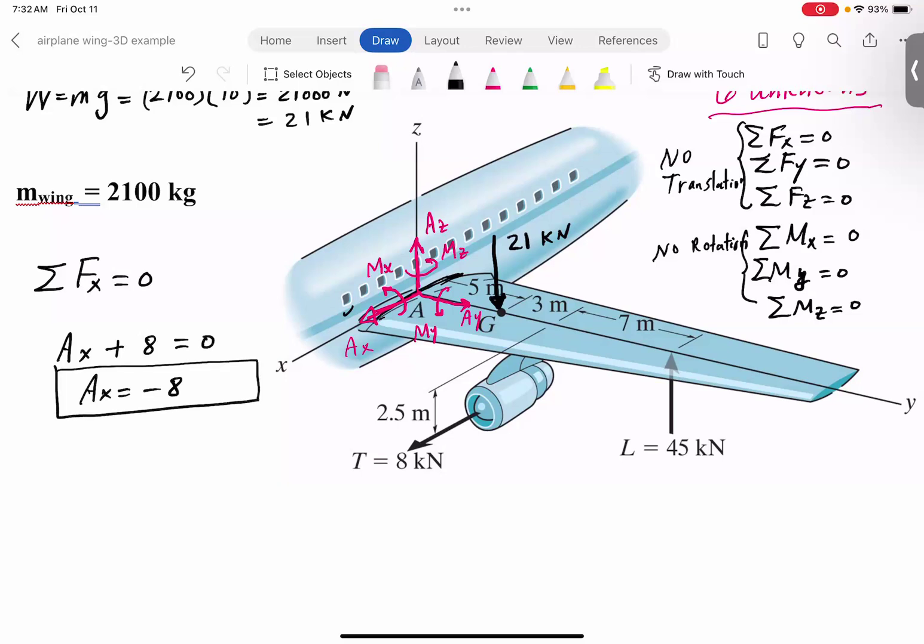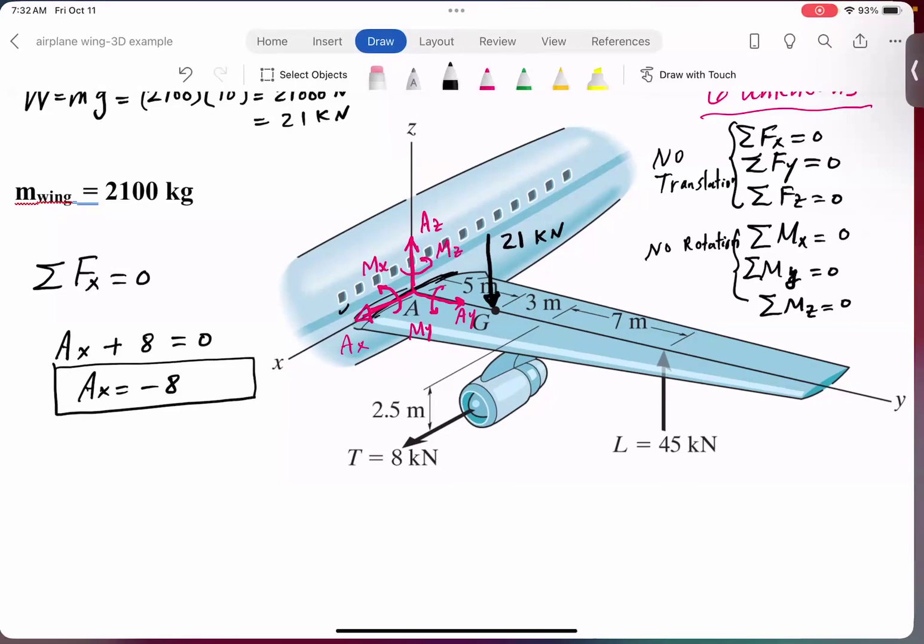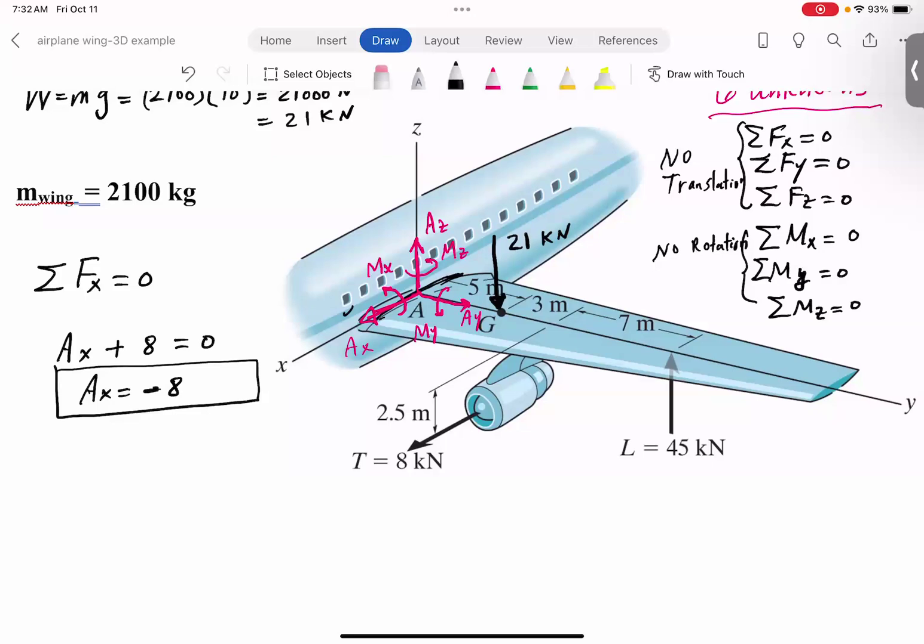For three-dimensional type of problems, unlike two-dimension, we just leave the sign and we don't say the direction has to change. Obviously, Ax has to switch direction, but we'll just leave it as negative. And that's kilonewtons.